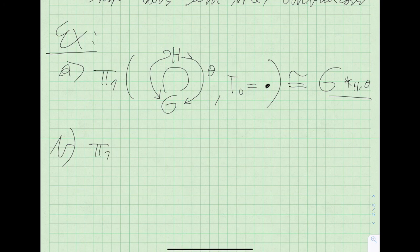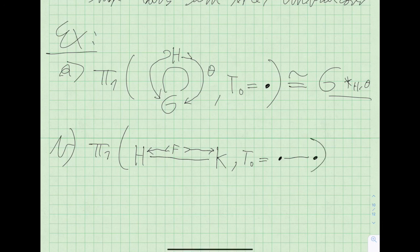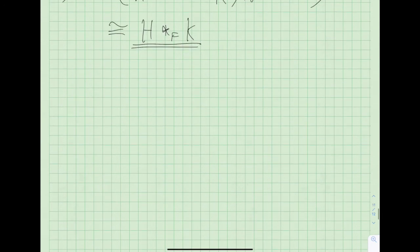On the other hand, an edge of groups — a single edge between two groups H and K with edge group F embedding into both — has, as its only choice of spanning tree, the whole graph itself. Its fundamental group is isomorphic to the amalgamated free product of H and K along F. If you find the canonical tree on which this amalgamated free product acts, the quotient graph of groups will be this edge of groups — and of course, this is no coincidence; it's the whole point of Bass-Serre theory.